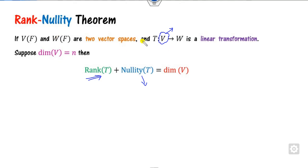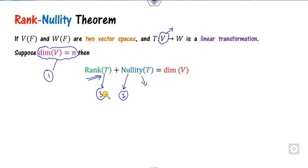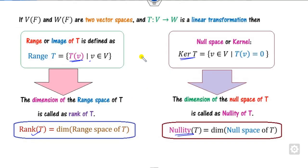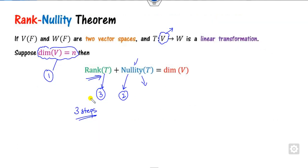Reading the statement carefully, there are three things: the dimension of V, the nullity, and the rank. Our target is to prove the theorem in these three steps. Remember the definition of nullity — that T(V) = 0 — and rank is the dimension of the range space. Let us start the proof in a simple manner.